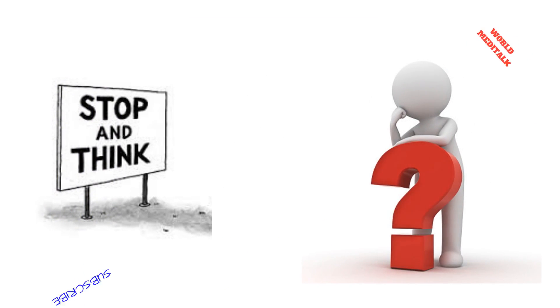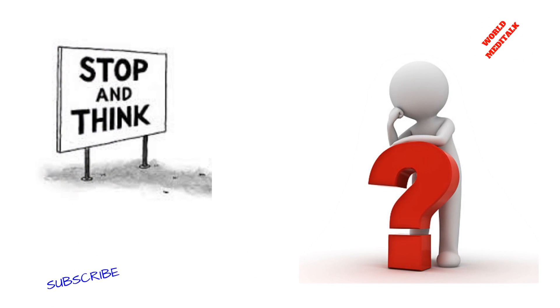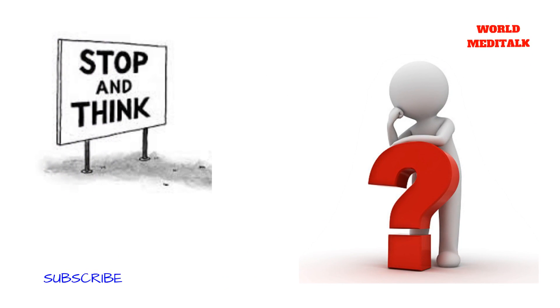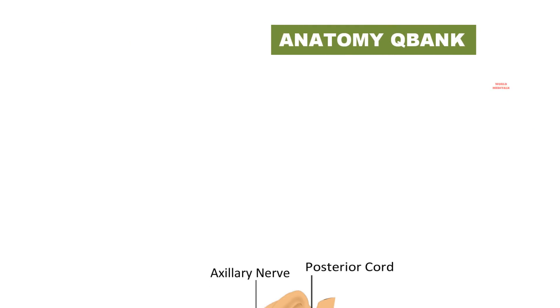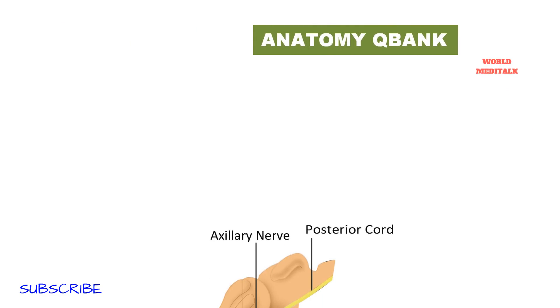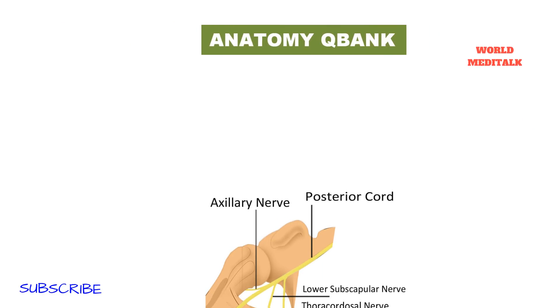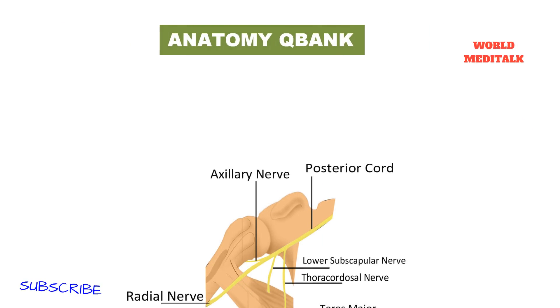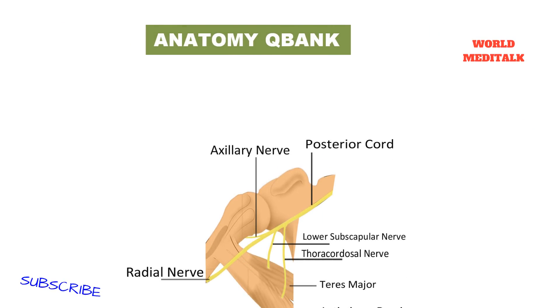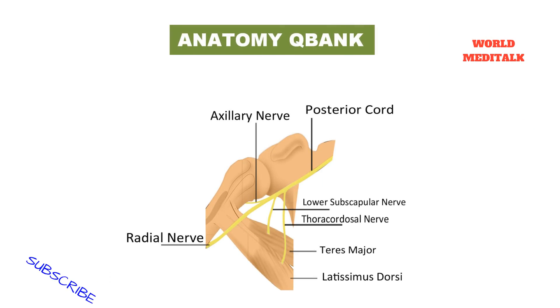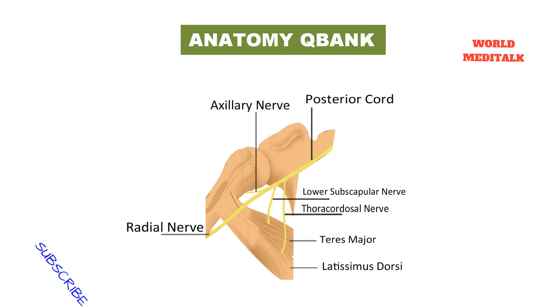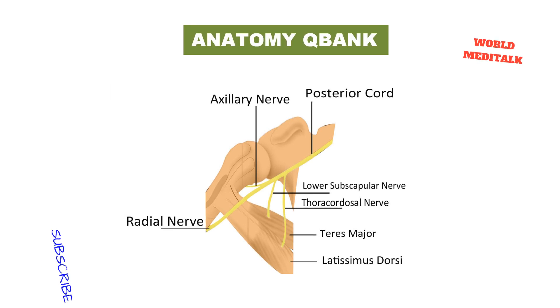The answer is thoracodorsal nerve. The thoracodorsal nerve innervates the latissimus dorsi muscle, which is an important muscle for adducting, medially rotating, and extending the arm. This is the muscle that is used when swimming and the action of crawling is performed.